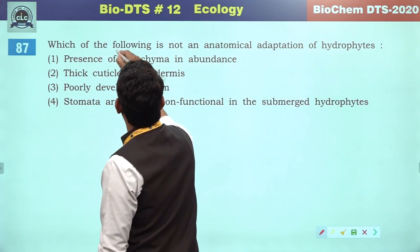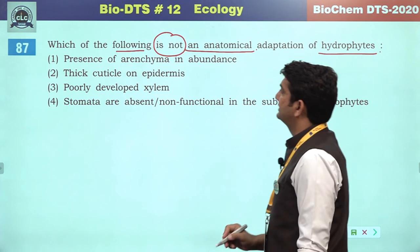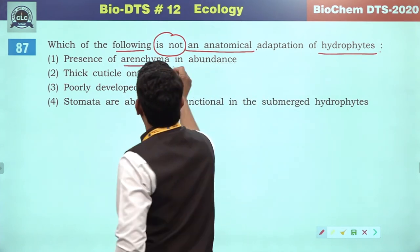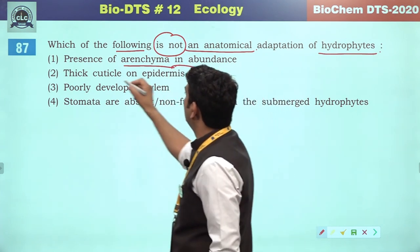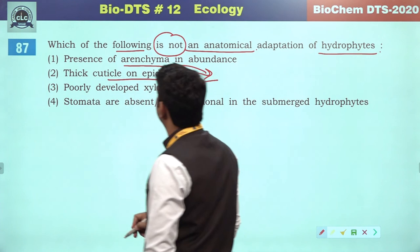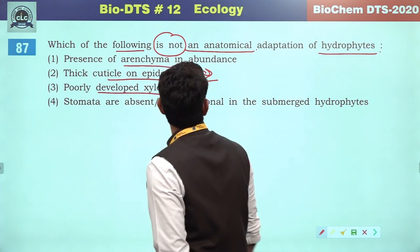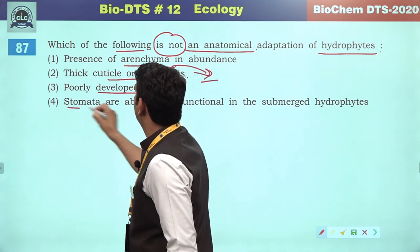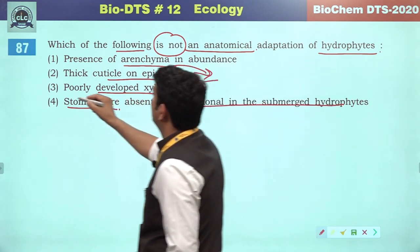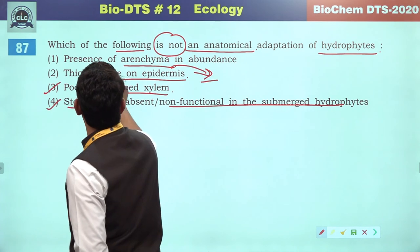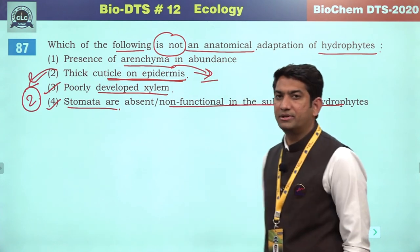Which of the following is not an anatomical adaptation of hydrophytes? Presence of aerenchyma in abundance provides buoyancy — definitely present. Thick cuticle on epidermis — poorly developed xylem. Stomata are absent and non-functional in submerged hydrophytes. Thick cuticle on epidermal surface is an adaptation for terrestrial habitat plants, not hydrophytes. So the second will be the correct answer.